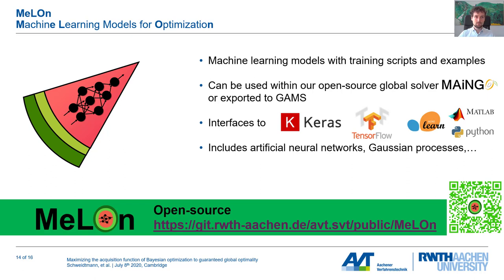If you want to use this setup in your chemical experiments, you can do so using the Mellon toolbox we have developed. The Mellon toolbox is a machine learning optimization toolbox providing machine learning models such as neural networks and Gaussian processes. You can use these models automatically in our global solver Mango. We also interface with Keras, TensorFlow, and so on — you can train models in your favorite machine learning toolbox and export them to Mango. Everything is open source and freely available.